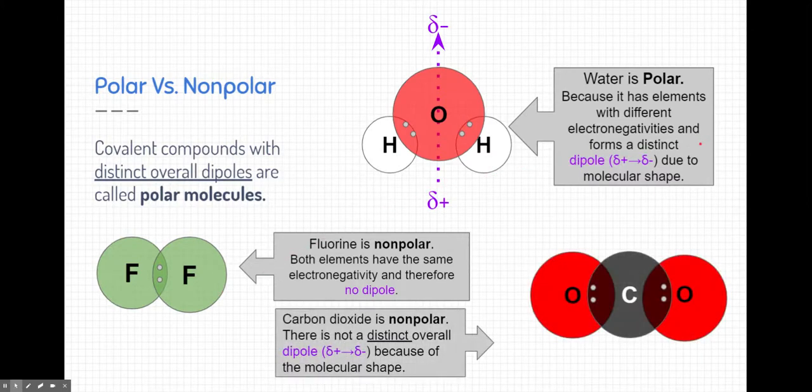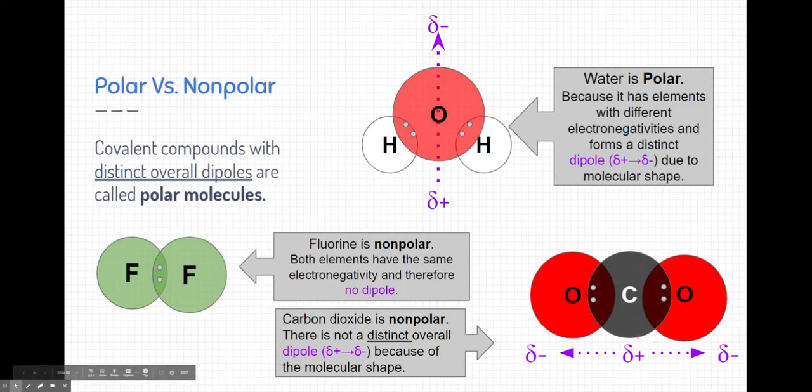My last example is carbon dioxide. There are dipoles that exist within this molecule, but there's not an overall distinct dipole. You can see that each of the oxygens are pulling the electrons more nearest to them because they have a higher electronegativities than carbon in the middle. But there's no distinct positive end and negative end of this molecule. In fact, it has two negative ends and a partial positive middle. So this one we would say is nonpolar even though it has dipoles.